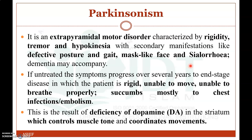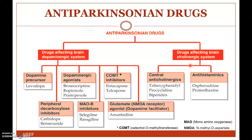Coming to the classification of anti-Parkinsonian drugs. They are mainly classified into drugs acting on the brain dopaminergic system and drugs affecting the brain cholinergic system.